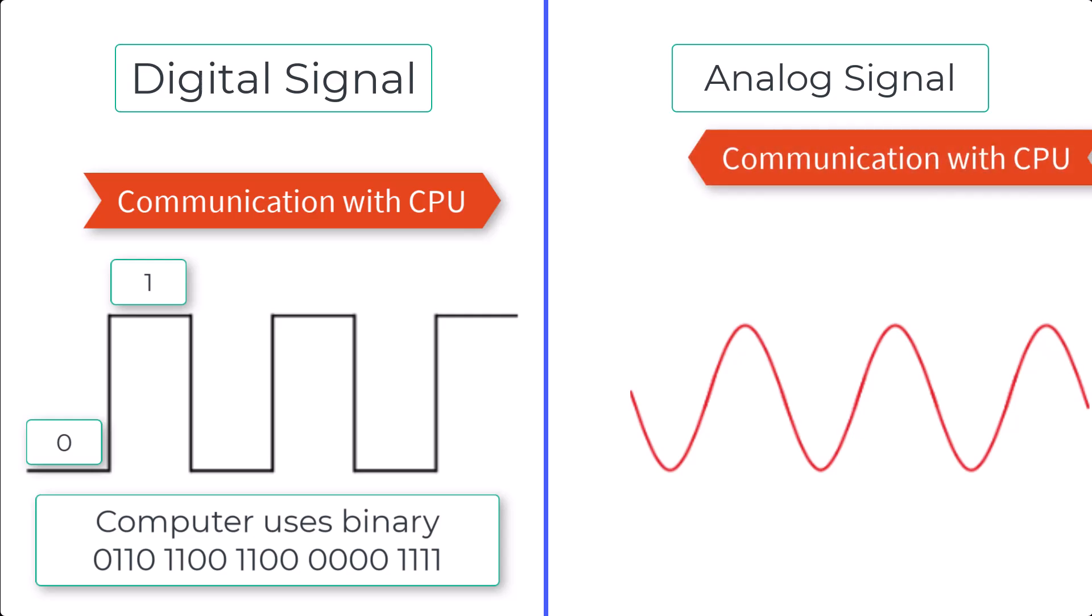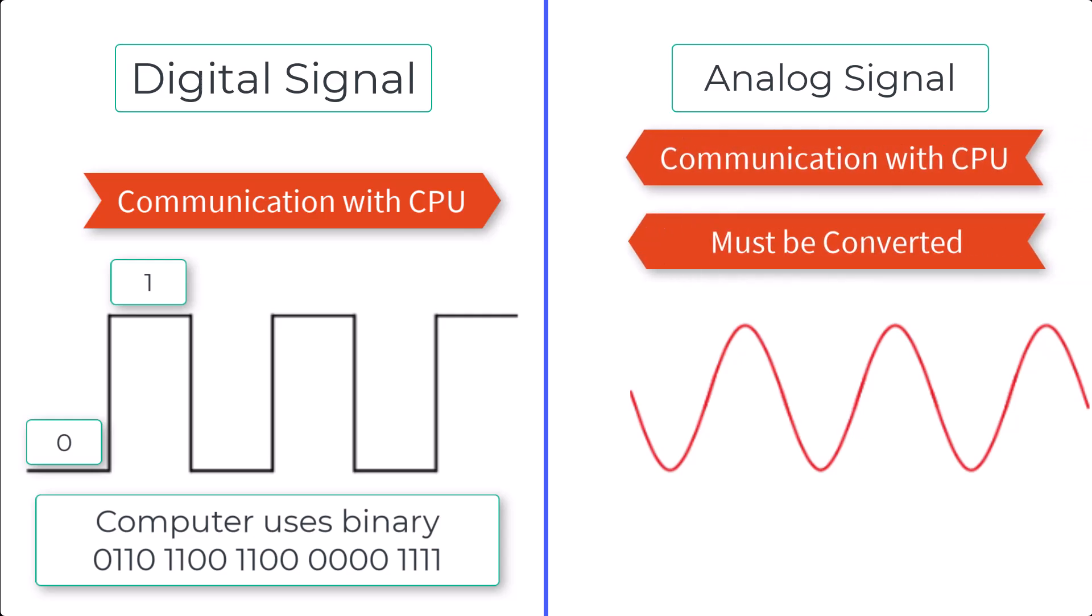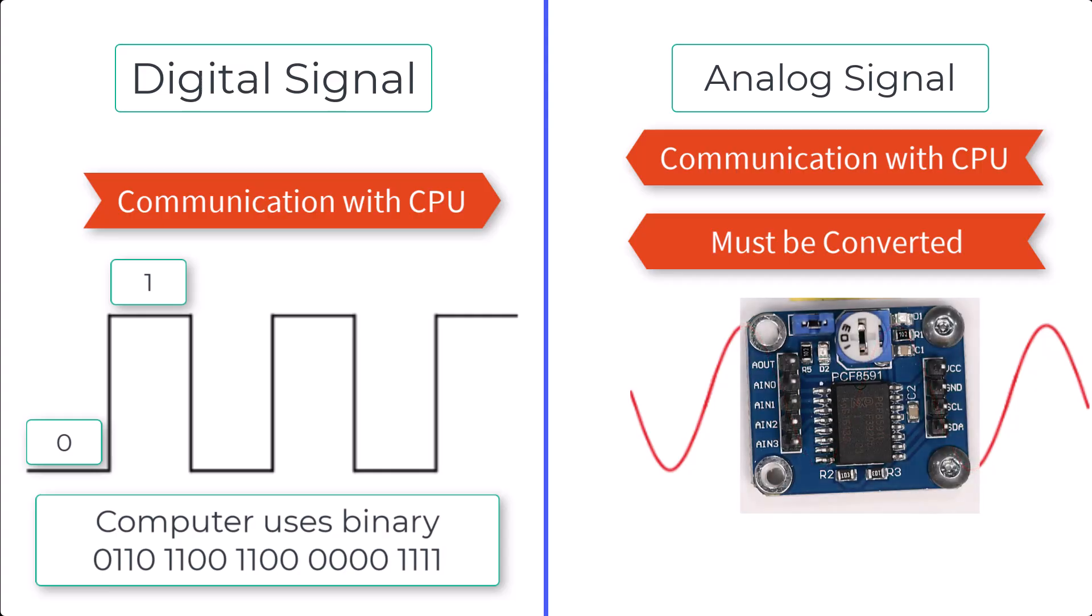An analog signal, on the other hand, has to be converted into a digital signal, using something called an analog-to-digital converter, so that the computer can understand it. This extra step can sometimes introduce delays or inaccuracies.